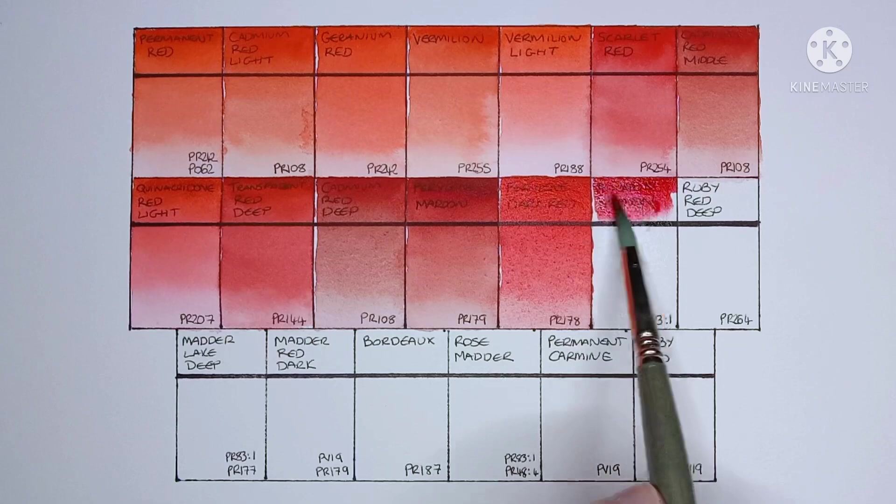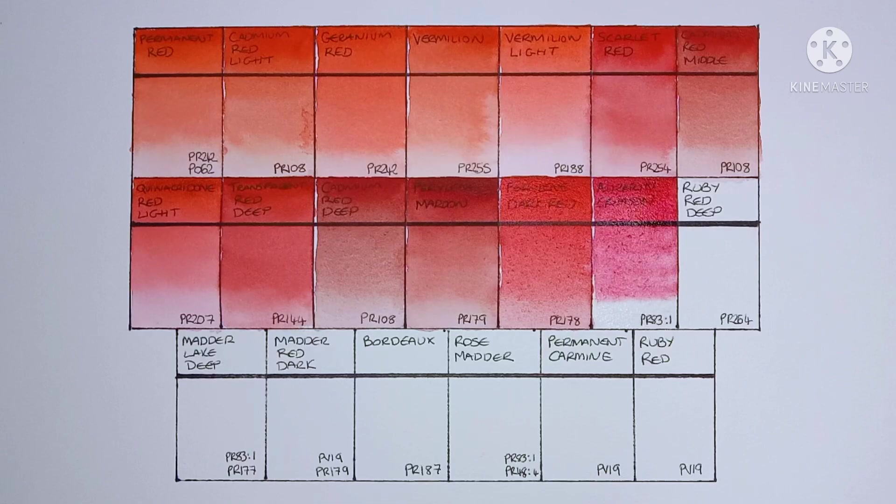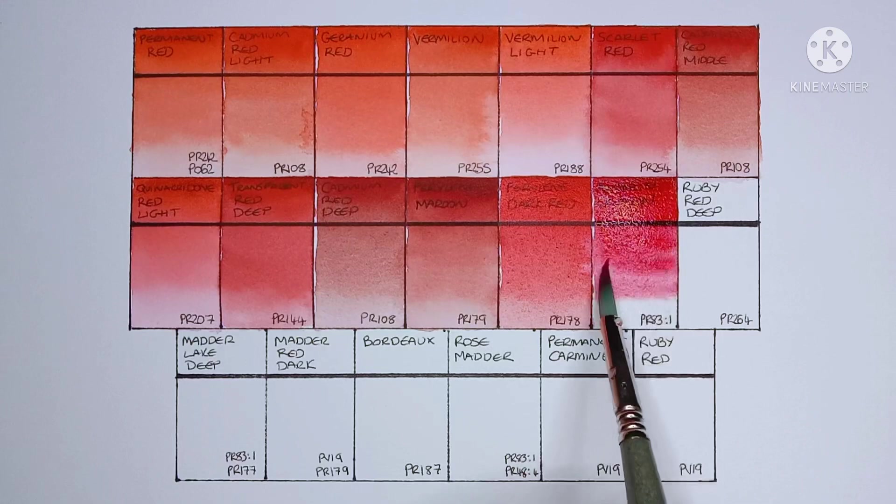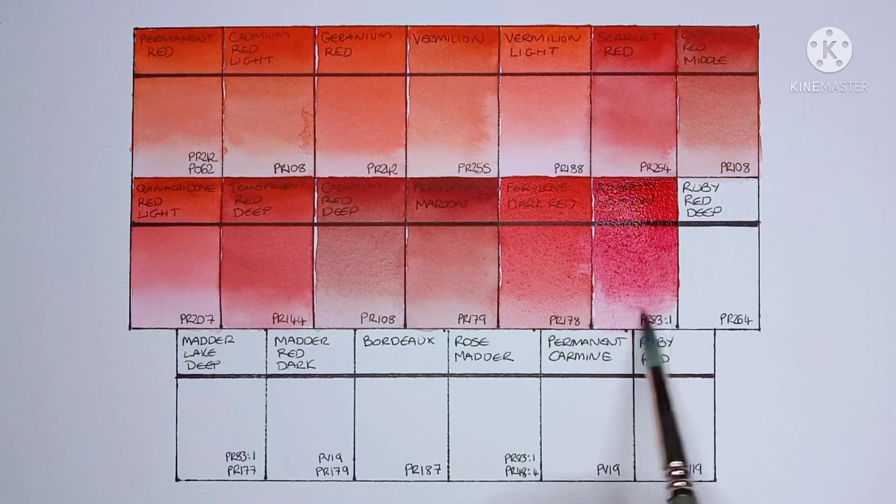And next up is alizarin crimson, which is PR83-1. So this is a pigment that quite a few people know about. As beautiful as it is, it is fugitive and it's going to fade over time when exposed to sunlight. I mean that might not be a problem for people who are only painting sketchbooks or if you scan your work and reproduce it digitally. But if you do plan to hang it on the wall or sell it, then it's probably best avoided.